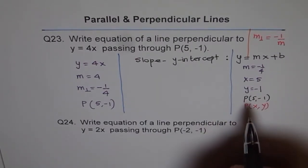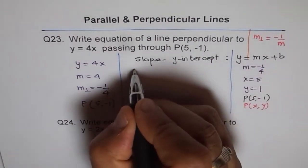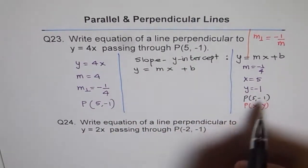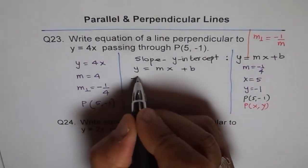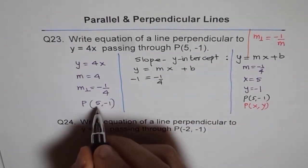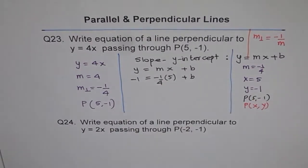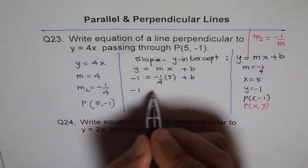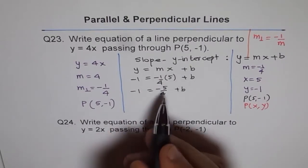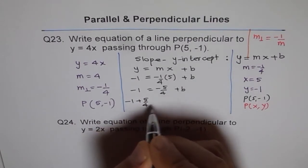So let us try to do it. We have y equals mx plus b. So y is minus 1. We write minus 1 equals to slope is minus 1 over 4, times x value which is 5, plus b. So that is our equation. This is minus 1 equals minus 5 over 4 plus b. To solve for b, we take this on the other side, we say minus 1 plus 5 over 4 equals b.